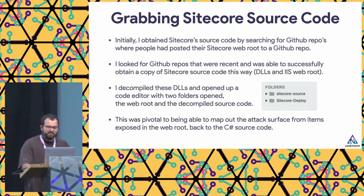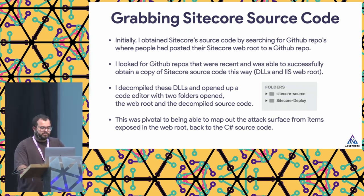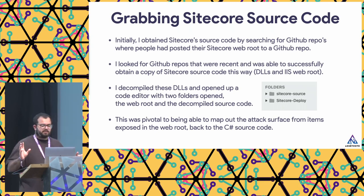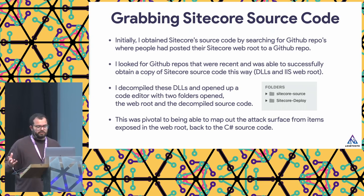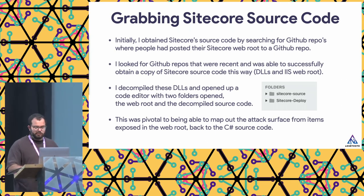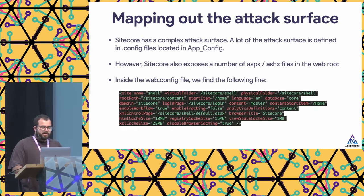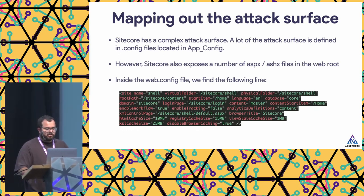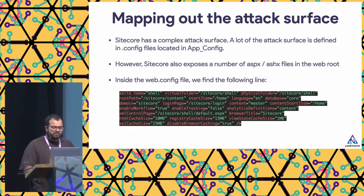I obtained the Sitecore source code from a GitHub repository, getting both the web root of Sitecore and the source code after decompiling all the DLL files. There was attack surface in both areas that needed to be mapped together — this is specific to many .NET applications where you have C# source code but also files in the web root that map to it. Looking at the .config files, we found inside web.config that /Sitecore/shell maps to the physical folder /Sitecore/shell — an important discovery that led to our findings later on.